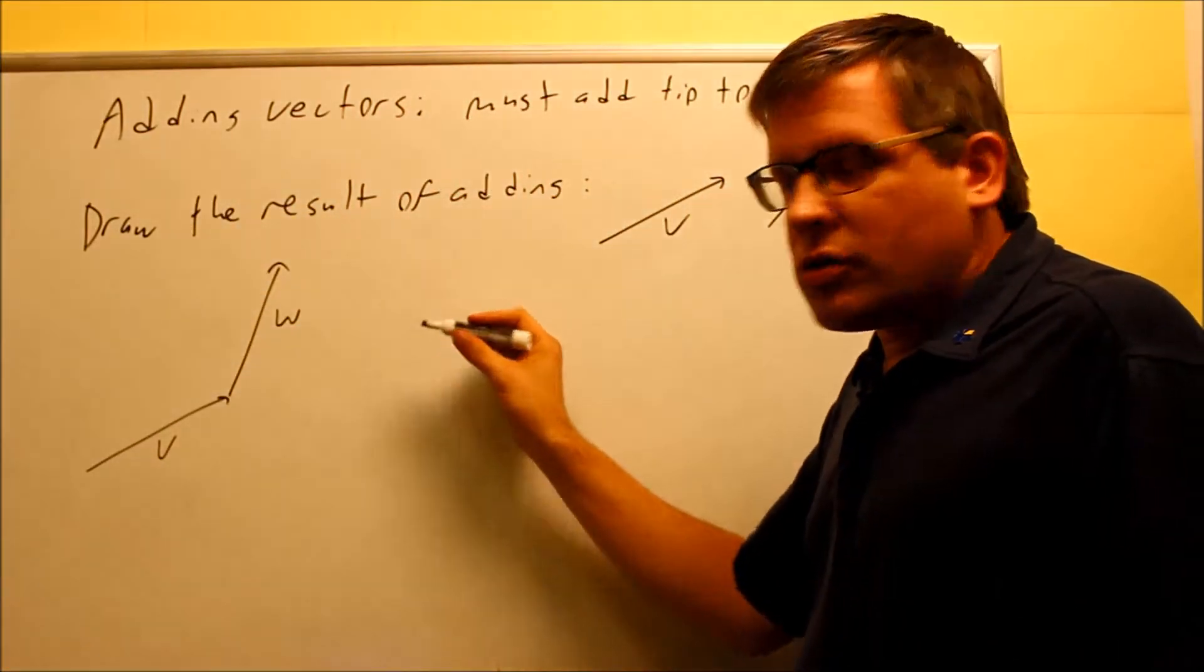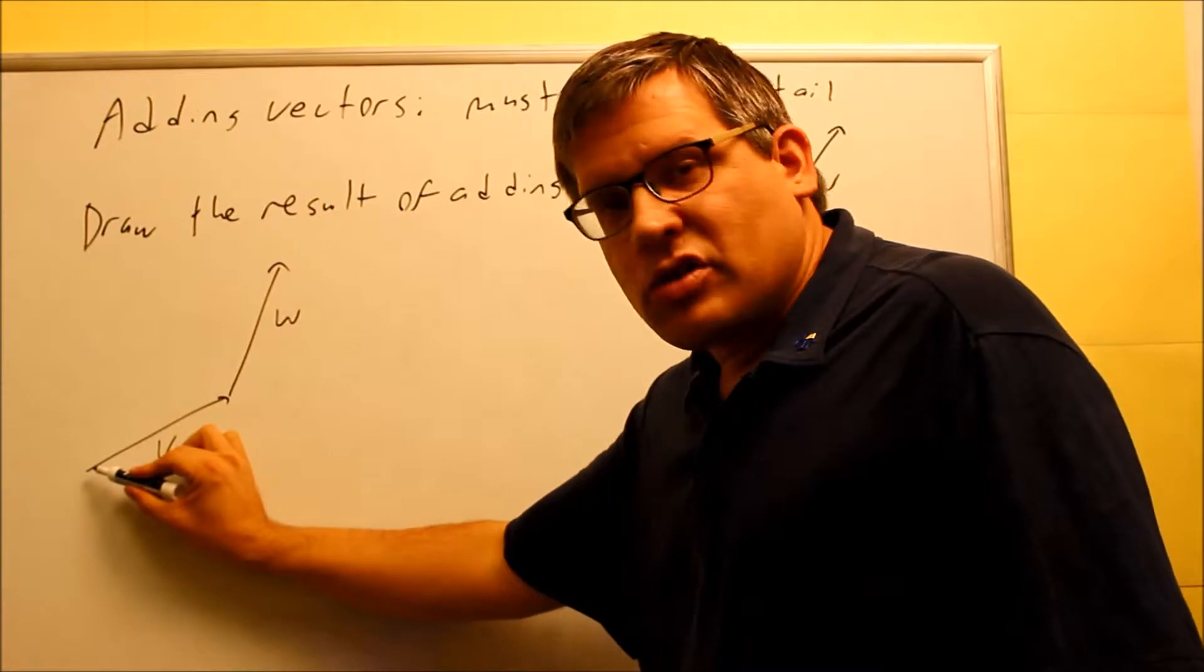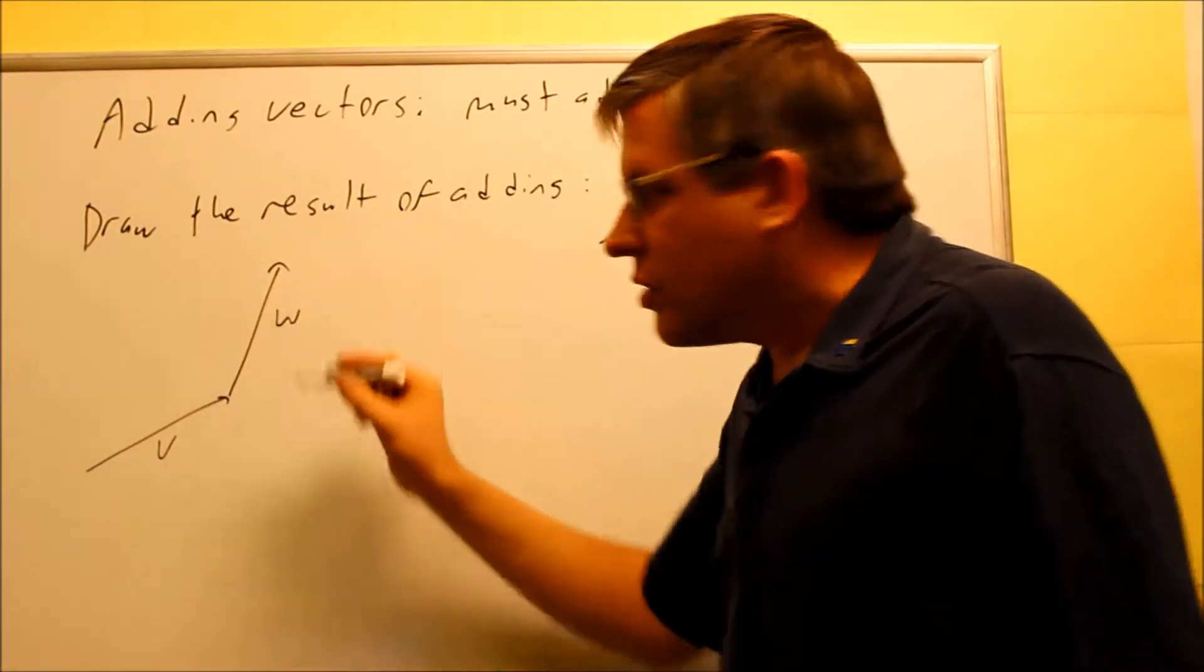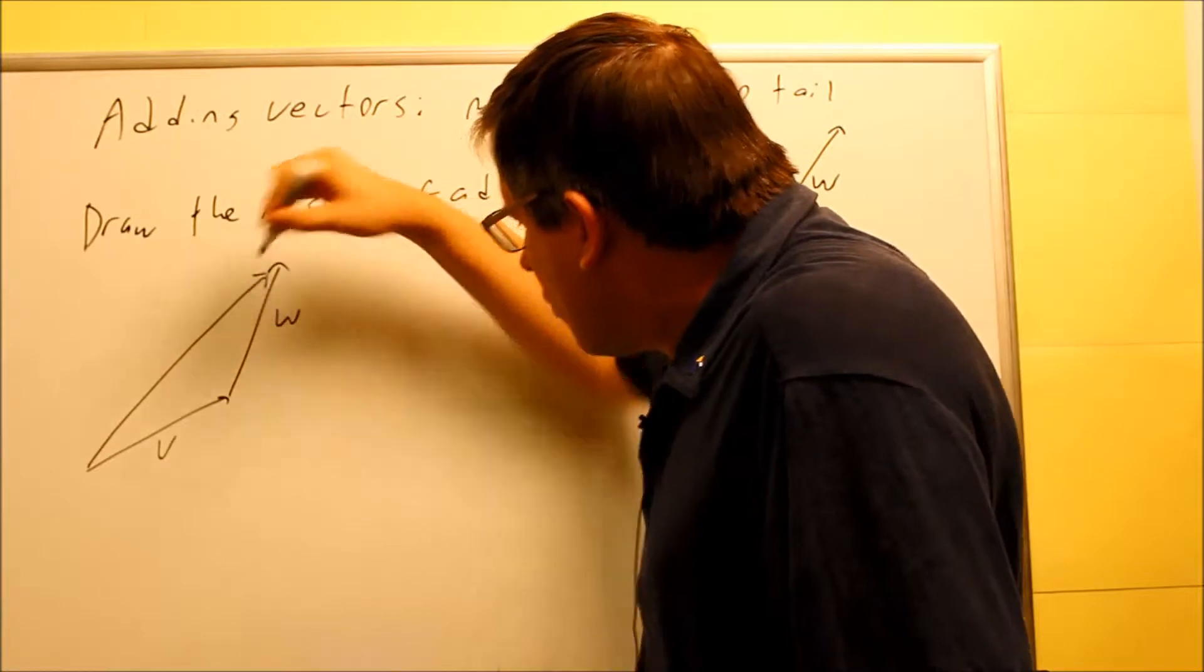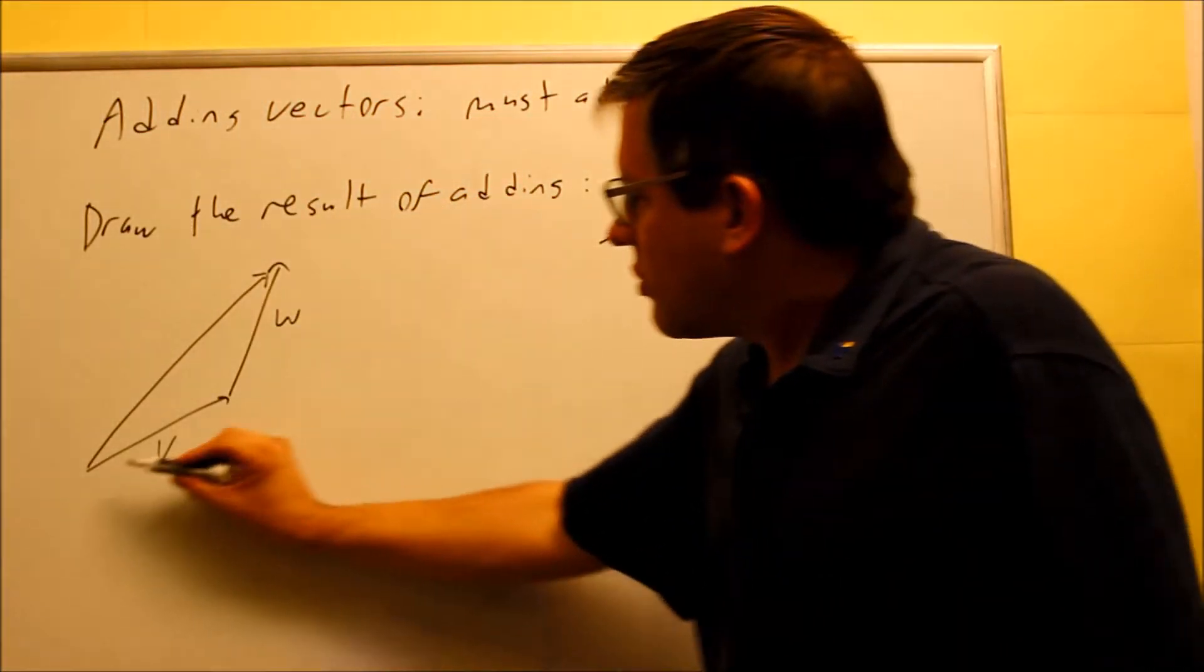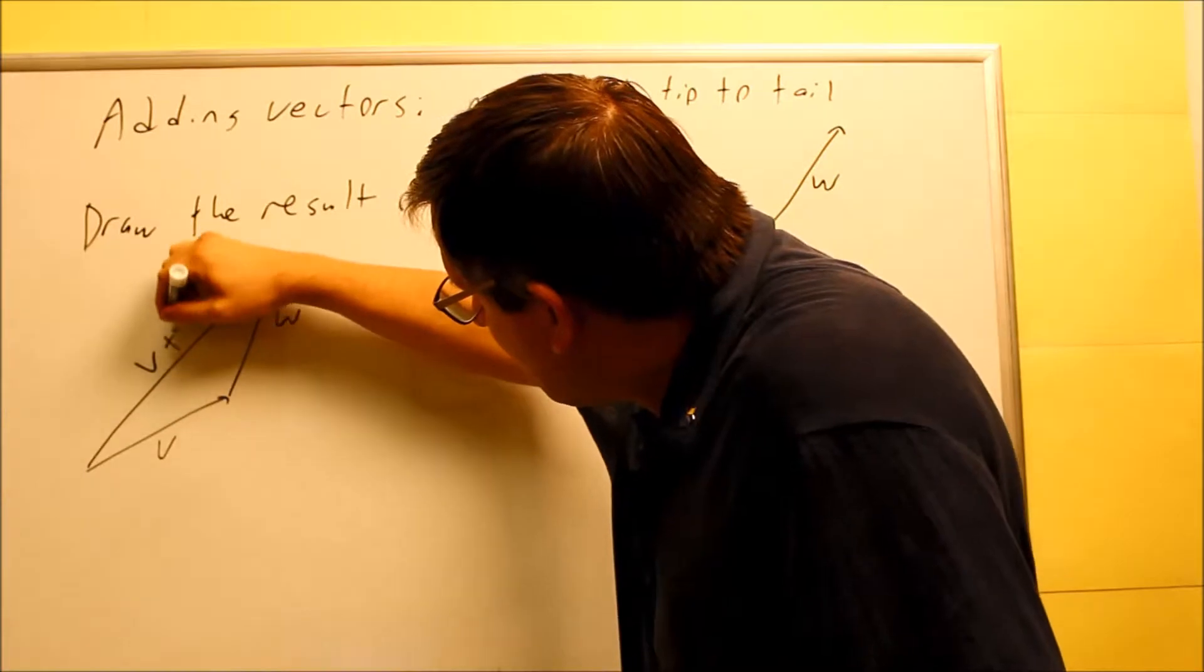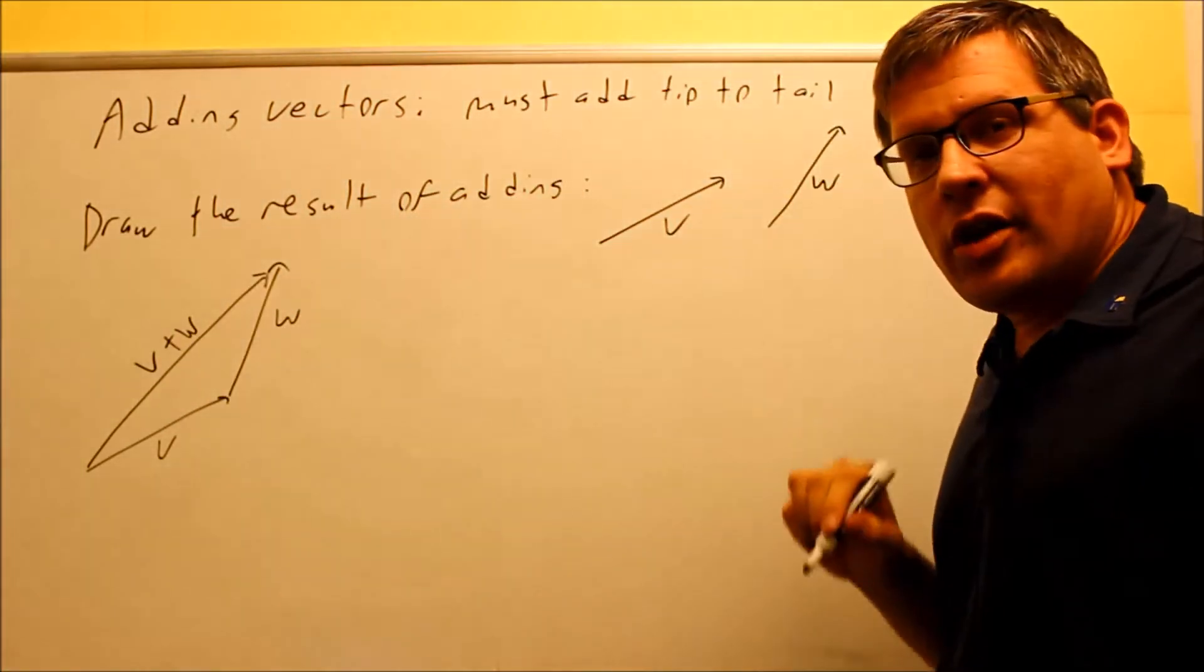Now what you do to show the result is you're going to draw a line from the starting point to the ending point. You are allowed to have double arrowheads. You are going to have them in this case when you're drawing the results. So this is going to be V plus W and that's our answer.